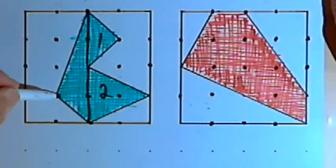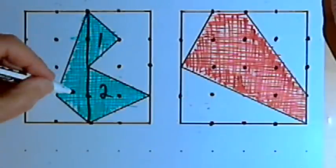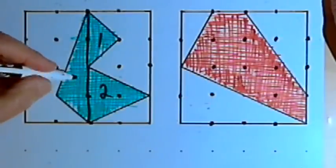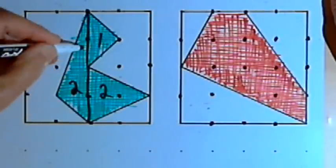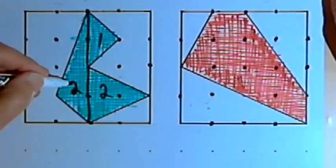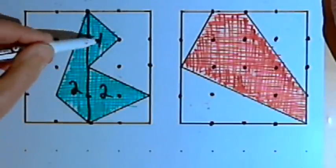The height would be right here, that would be 1 inch. So 4 times 1 is 4, and one-half of that would be 2. This triangle also has an area of 2 square inches.